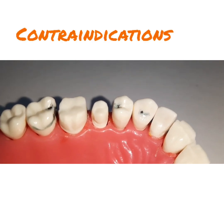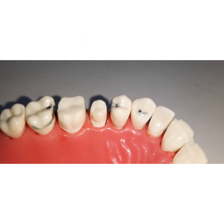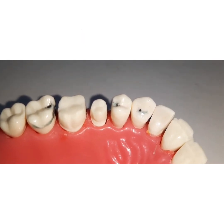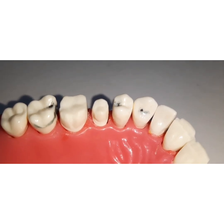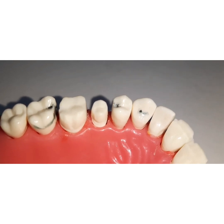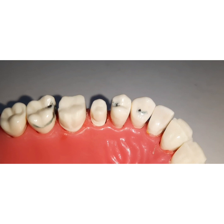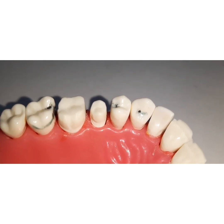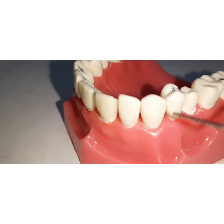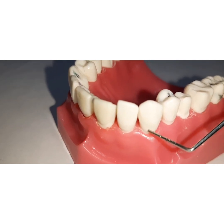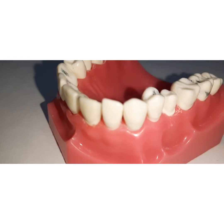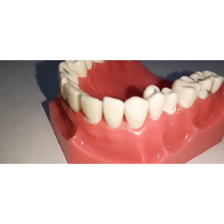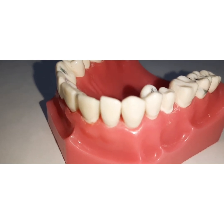The contraindications include short teeth and non-vital teeth, because these teeth are already weak and there is a chance of fracture — in those cases a full veneer crown preparation should be given rather than a partial veneer. Additionally, if the patient has a high caries index, cervical caries that have undermined the teeth and extend subgingivally, or extensive destruction or decalcification of the teeth, partial veneer crowns should not be given.